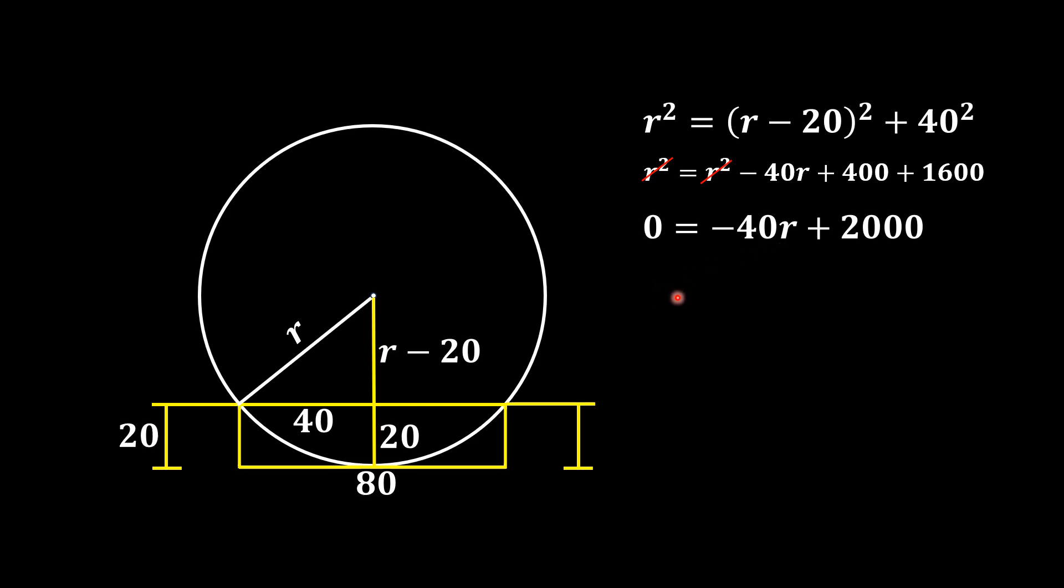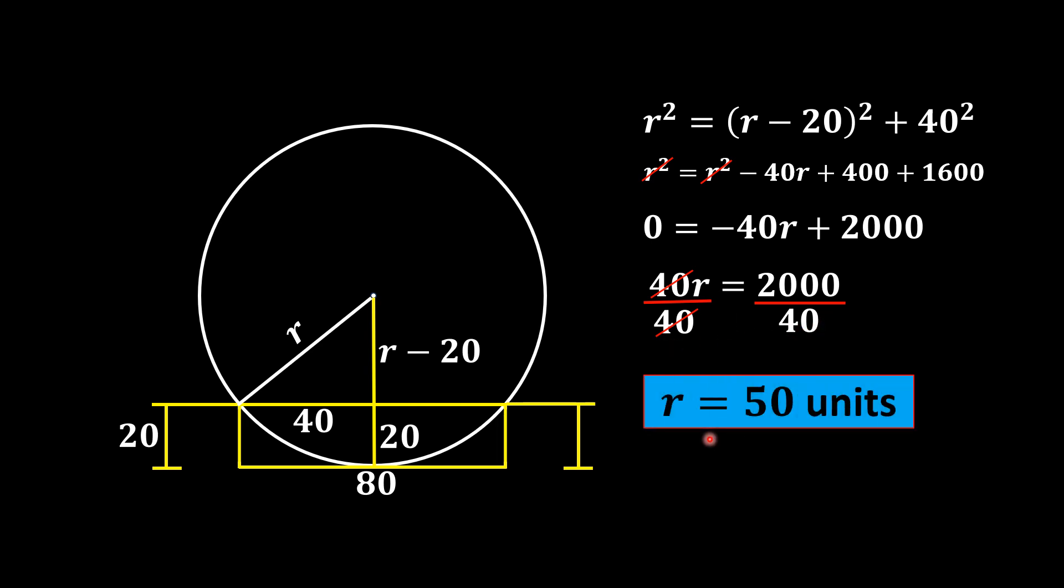Taking this -40r to the left, it becomes positive. Dividing both sides by 40, we get radius r = 50 units.